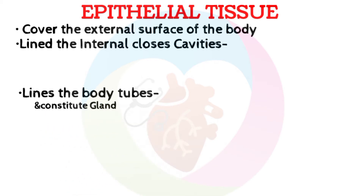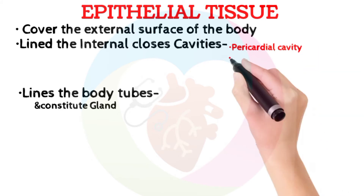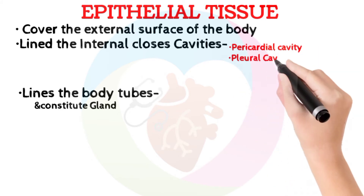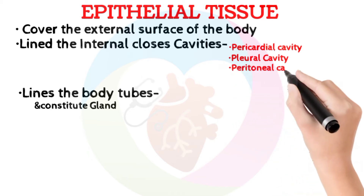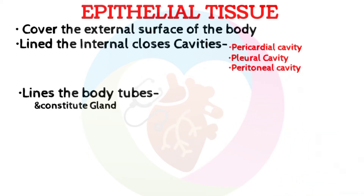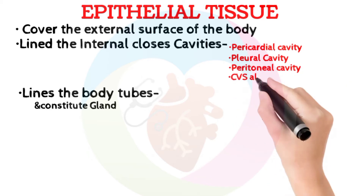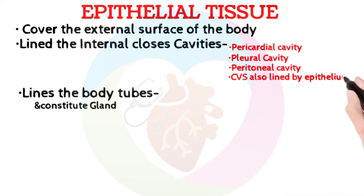Now, look at the closed cavities. Pericardial cavity — it is around the heart. Pleural cavity — it is around the lung. Peritoneal cavity — it is also known as abdominal cavity. The cardiovascular system is also lined by epithelial cells.